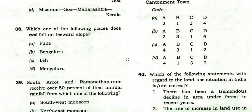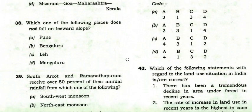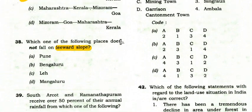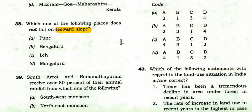Which of the following places does not fall on the leeward slope? The right option is D: Mangaluru.